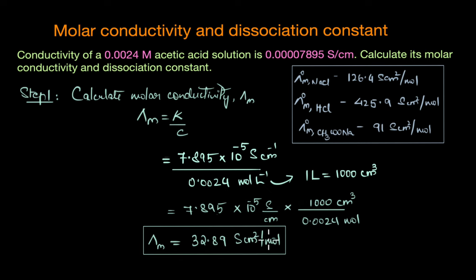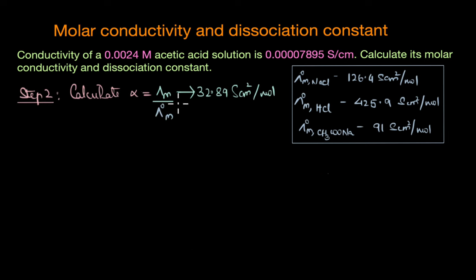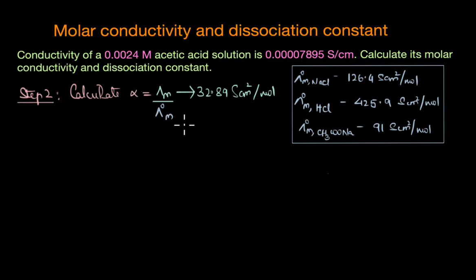This is the value of molar conductivity — it shows the conductivity exhibited per mole of the electrolyte. Now let's look at the second step: calculating the degree of dissociation alpha. Alpha equals molar conductivity divided by the limiting molar conductivity of acetic acid. Molar conductivity is 32.89 S·cm² per mole, calculated in step 1. We estimate the limiting molar conductivity using Kohlrausch's law of independent migration of ions.